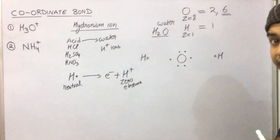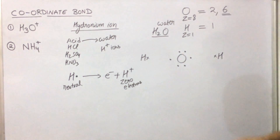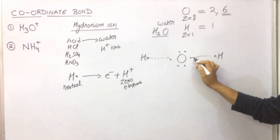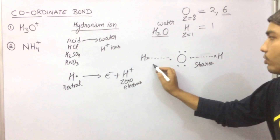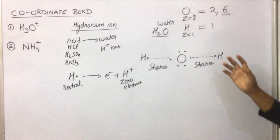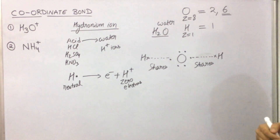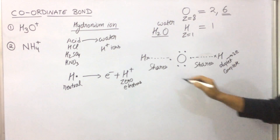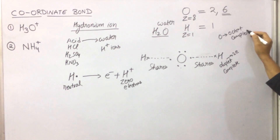Oxygen needs eight electrons in the outermost shell — it has six, so it needs two more. It shares one electron from each hydrogen. Now oxygen has eight electrons and its octet is complete. Each hydrogen needed two electrons total; it already had one and gained another by sharing with oxygen, so hydrogen has its duplet complete. Duplet means two electrons.